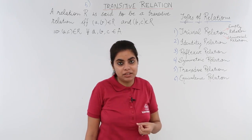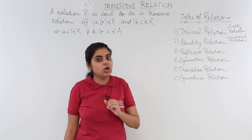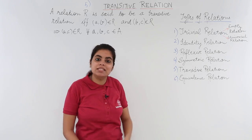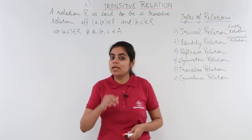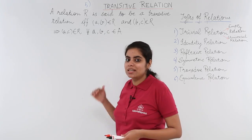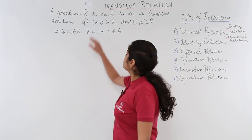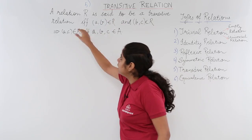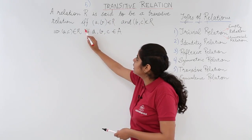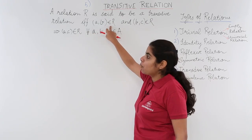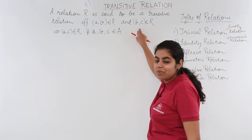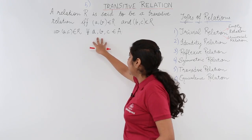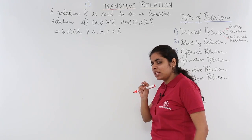Now let's see what is a transitive relation. We already have some knowledge about these relations up to symmetric relation, which has been covered earlier. Let's see what a transitive relation is and look at some examples. A relation R is said to be a transitive relation if and only if: AB belongs to R and BC belongs to R implies AC belongs to R, for all A, B, C belonging to set A.